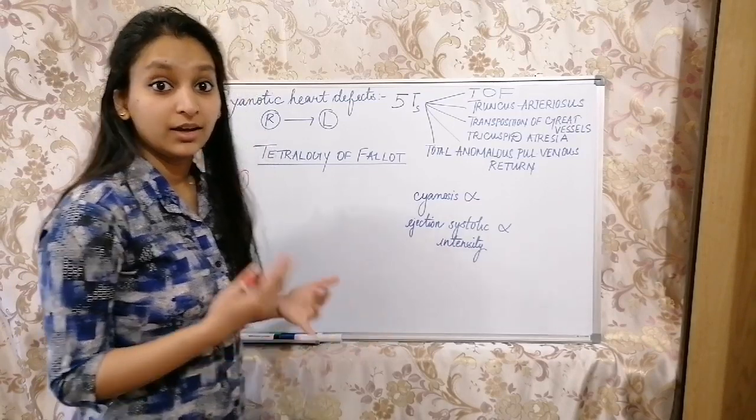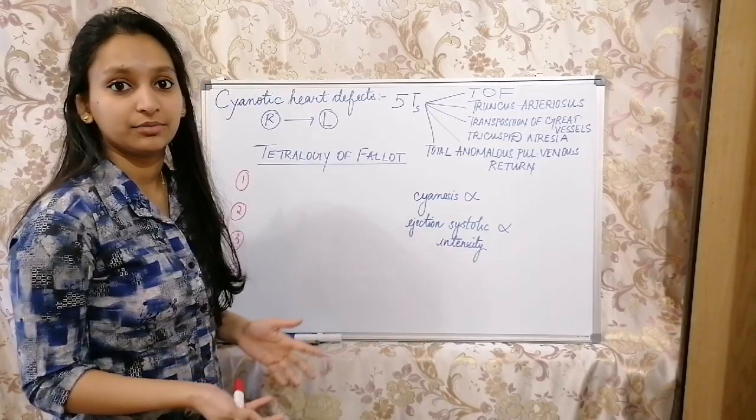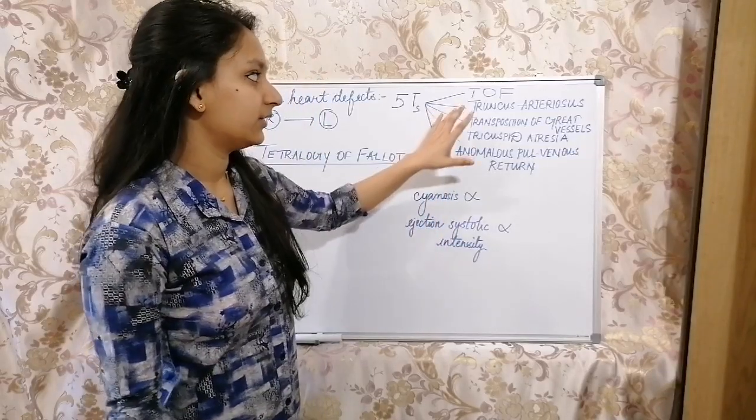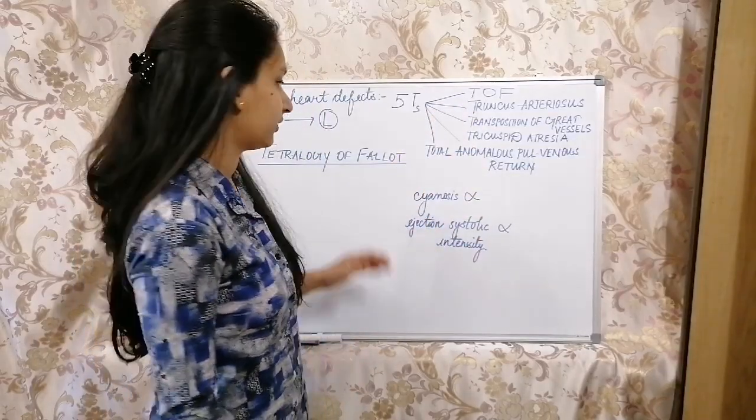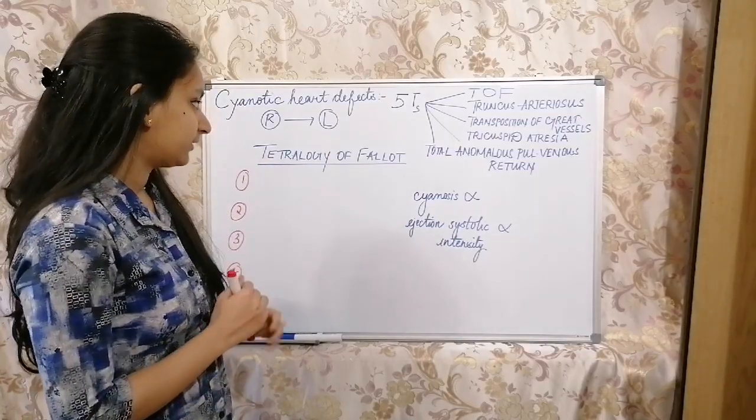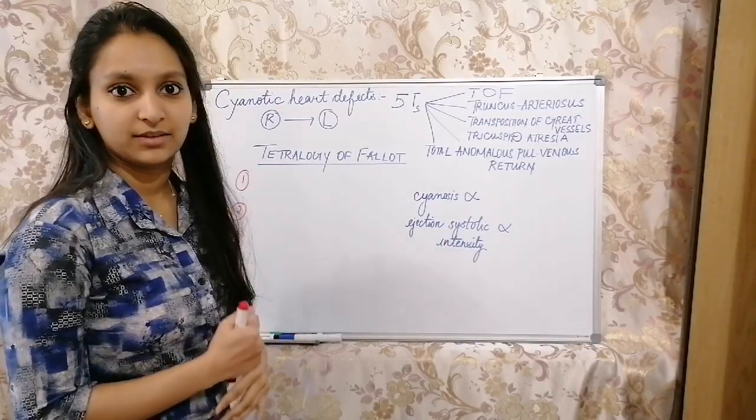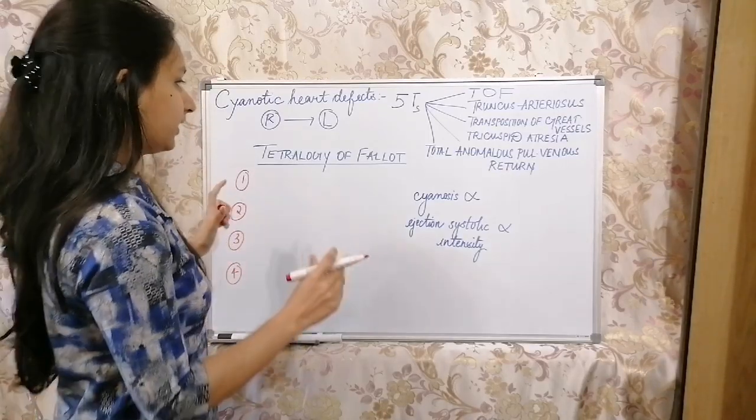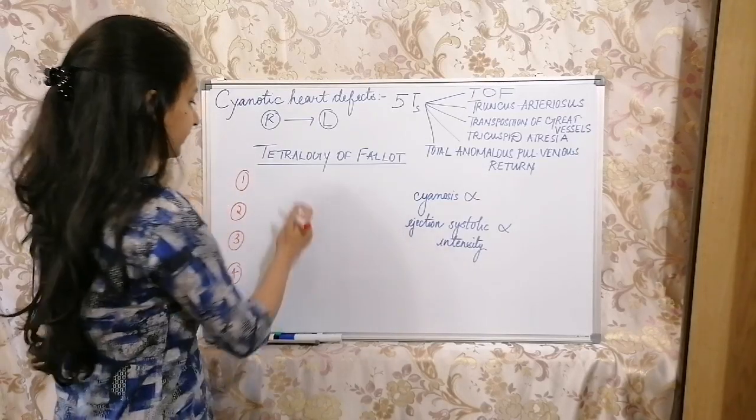In our subsequent videos we will be discussing each of these topics. Today we are going to start with Tetralogy of Fallot. As the name states, tetralogy means something comprising of four constituents. Let's see what are the constituents in Tetralogy of Fallot.